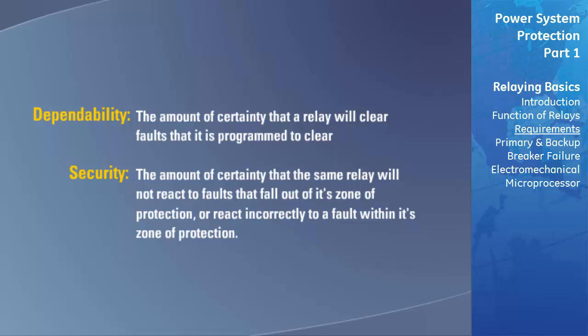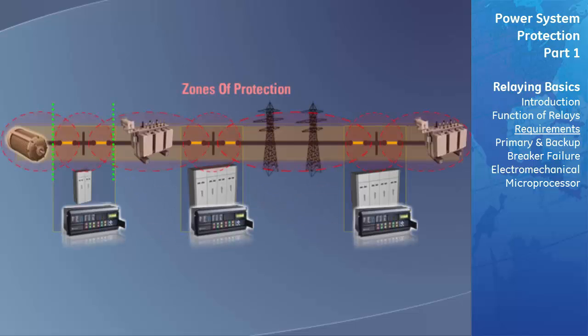Generally, when the dependability of a relay is increased, the security decreases and vice versa. For example, let's increase the sensitivity of one of the relays in our example protection scheme to be as dependable as possible. Now, when a fault occurs within this relay's protective zone, our relay is sure to identify and clear the fault. However, when a fault occurs outside of this relay's established zone of protection, it attempts to clear the fault. This is because the relay has been made so sensitive that it identifies and reacts to faults even though they fall outside of its zone of protection.